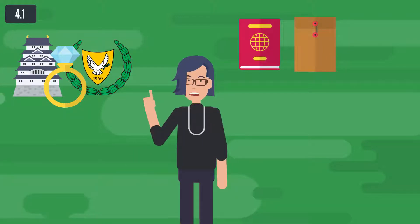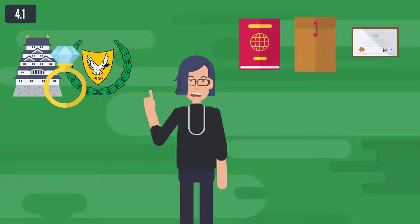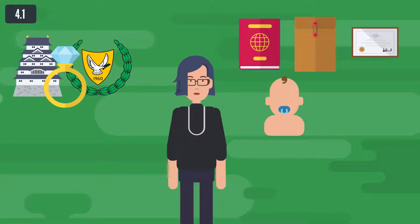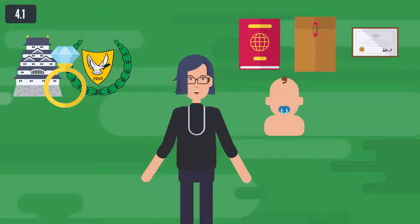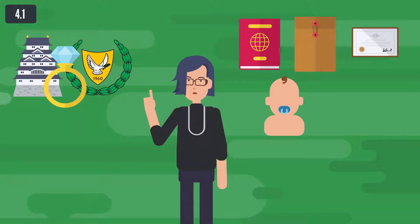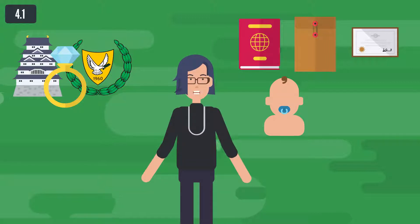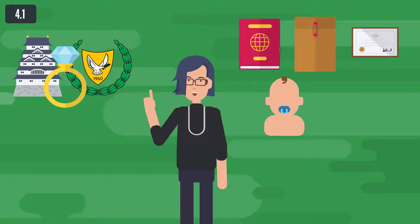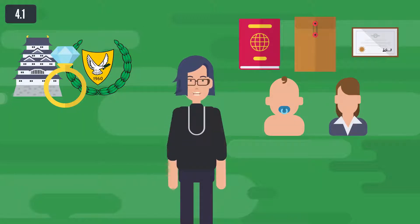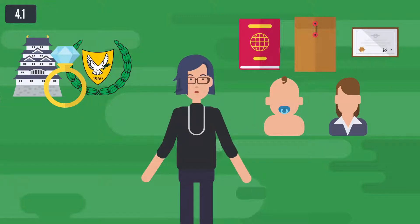C. Where appropriate, the registration certificate of the union citizen whom they are accompanying or joining. D. In the case of a spouse of a union citizen and direct dependents under 21 or who are dependents of the citizen and those of the spouse, proof of existence of a family relation and that said family members are dependents. E. In some cases, a document issued by the relevant authority in the country of origin certifying that they are dependents or members of the household of the union citizen, or proof of serious health grounds which render the personal care of the family member by the union citizen absolutely necessary.